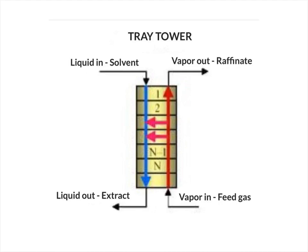For the tray tower, there are two inlet streams: the feed gas stream and the solvent stream. There are also two exit streams: one is called the extract stream and the other is called the raffinate stream. The raffinate stream is the gas stream, and the extract stream is a liquid stream. So we have two liquid streams — extract and solvent — and two vapor streams — feed gas and raffinate.